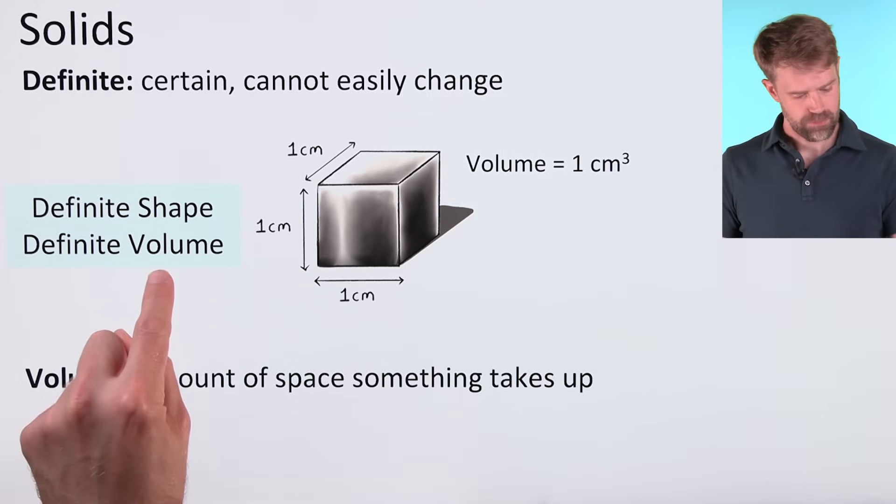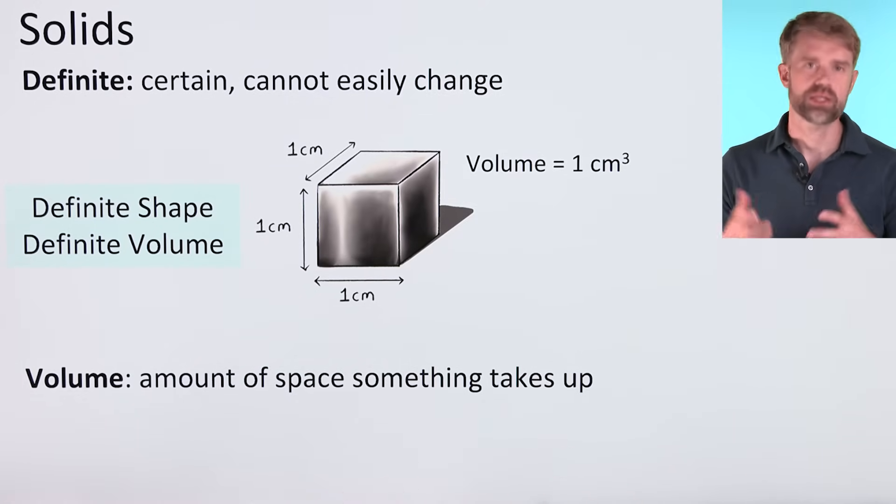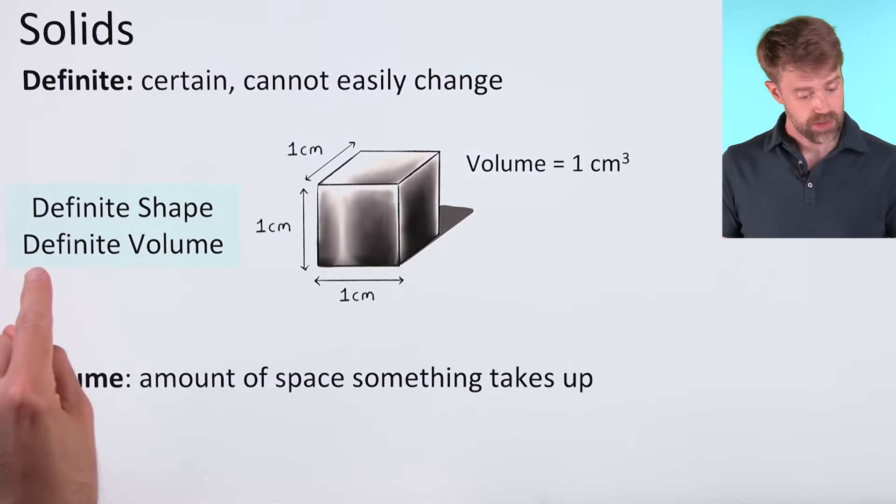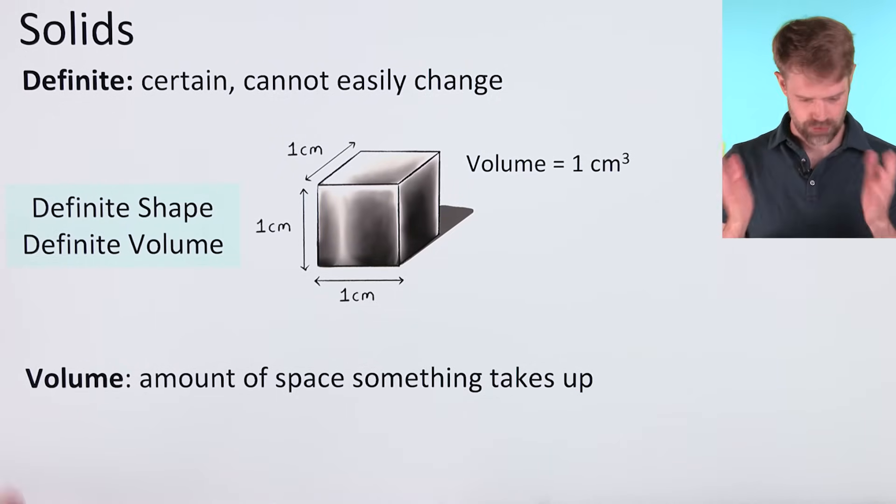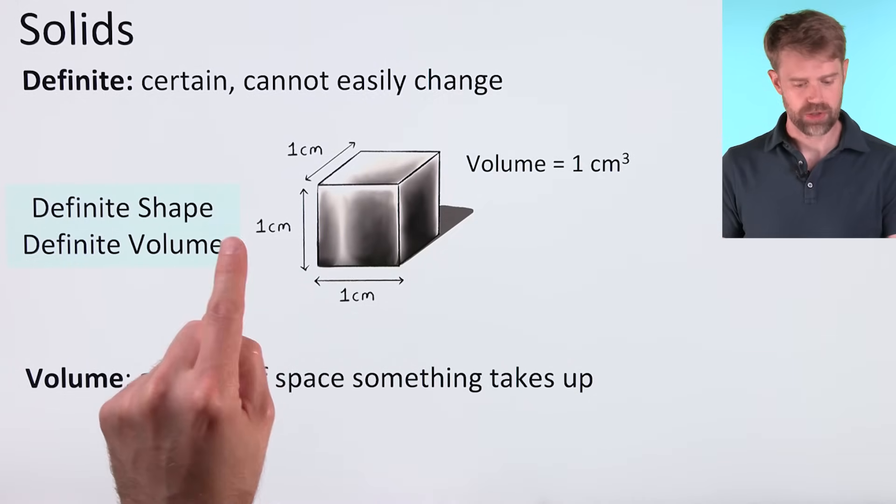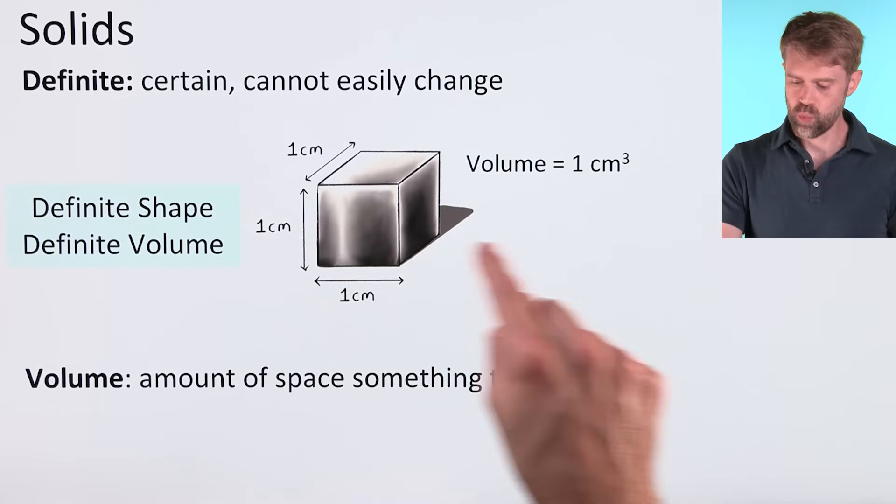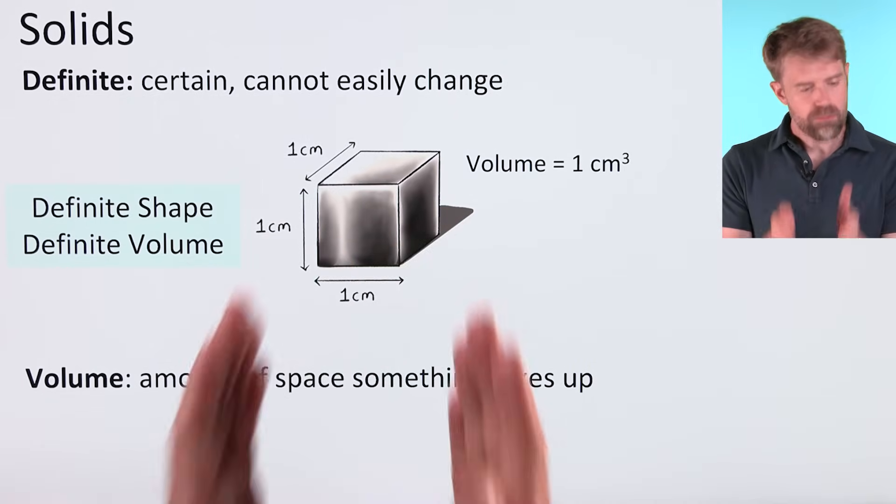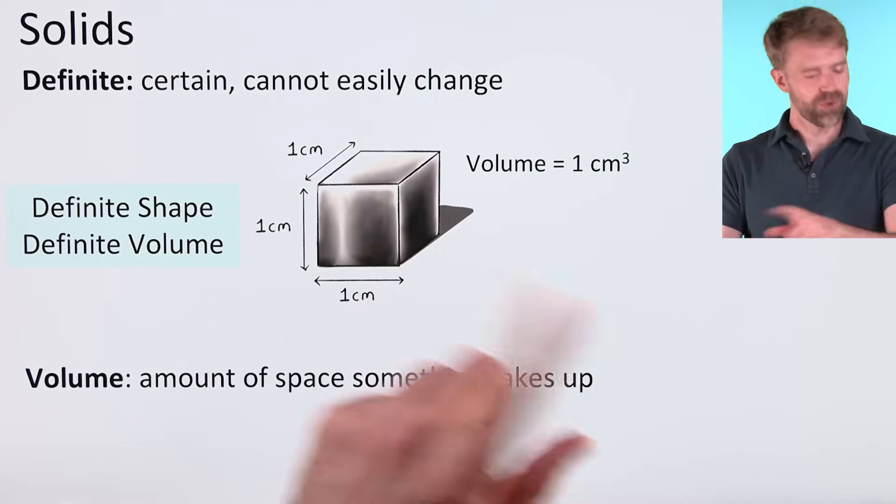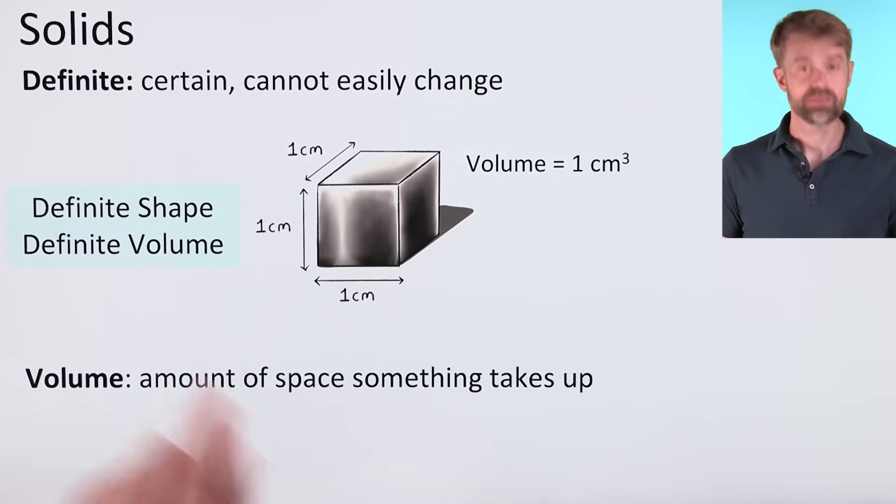For all these solids, unless we bang them or crush them, the shape isn't going to change. That's what makes it definite. Volume refers to the amount of space that something takes up. And for a solid, volume is definite too. For example, the cube has these dimensions of one centimeter by one centimeter by one centimeter. Its volume is one cubic centimeter. Move this cube around, roll it around, the volume won't change. It's definite.